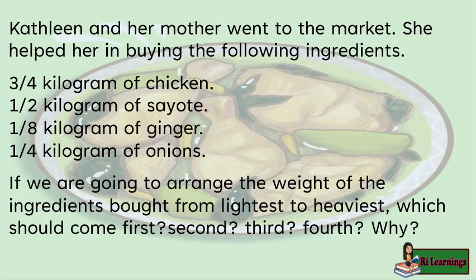Kathleen and her mother went to the market. She helped in buying the following ingredients: three-fourths kilogram of chicken, one-half kilogram of fish, one-eighth kilogram of ginger, and one-fourth kilogram of onions. If we are going to arrange the weight of the ingredients from lightest to heaviest, which should come first, second, third, and fourth? Why?